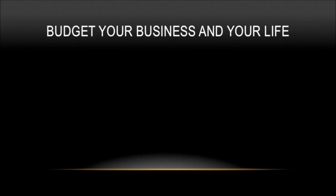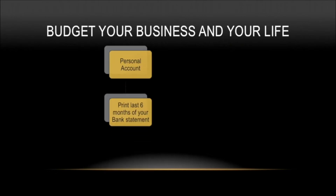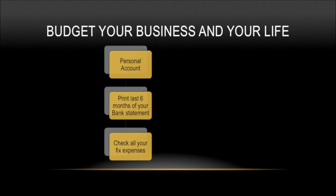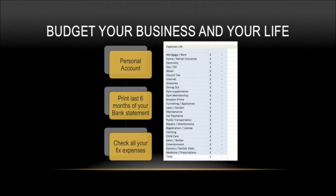So let's start from the first things: personal account. What you need to do is print the last six months of your bank statement. Check all your fixed expenses and write them down on this spreadsheet — your mortgage, your rent, your rental insurance, your electricity, your gas, your car payment, your Amazon Prime membership, your gym membership. Write down everything that is related to your personal life, everything that goes out every month.